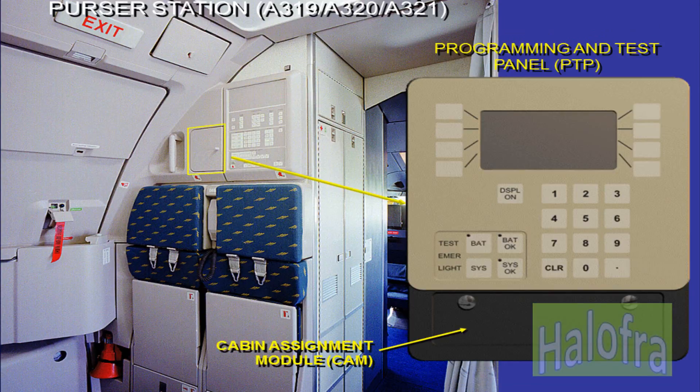The Programming and Test Panel, PTP, is located next to the forward attendant panel behind a hinged access door. It is equipped with a cabin assignment module, CAM, which contains all the software of customer-specific layouts and defined parameters. The PTP informs the crew about the cabin system status.